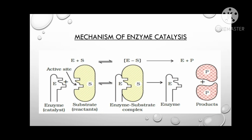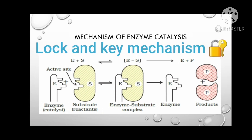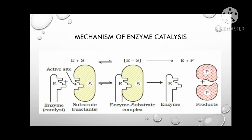This mechanism is called the Lock and Key Mechanism. The enzyme substrate complex fits together like a lock and key. That is why the enzyme is specific. In the second step, the enzyme-substrate complex decomposes to give the products.